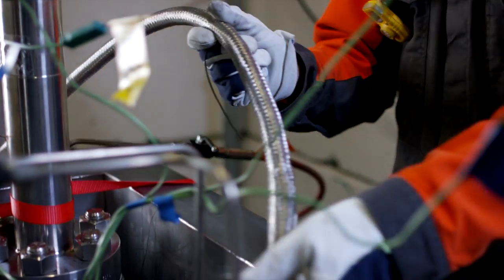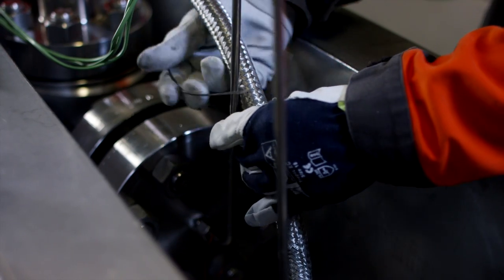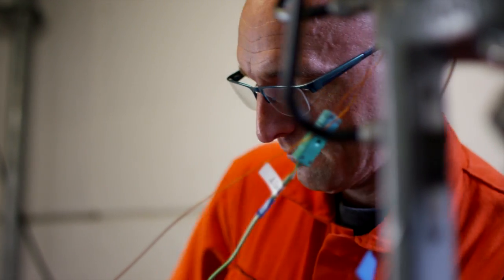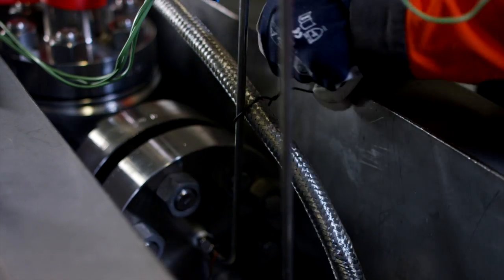Liquid nitrogen is used to cool down the temperature in the box to a minimum of minus 196 degrees Celsius in order to mimic operational conditions.